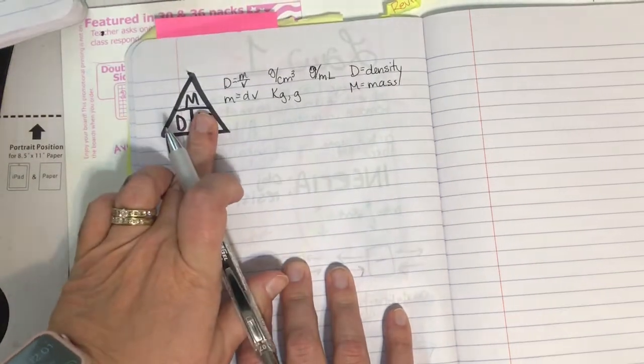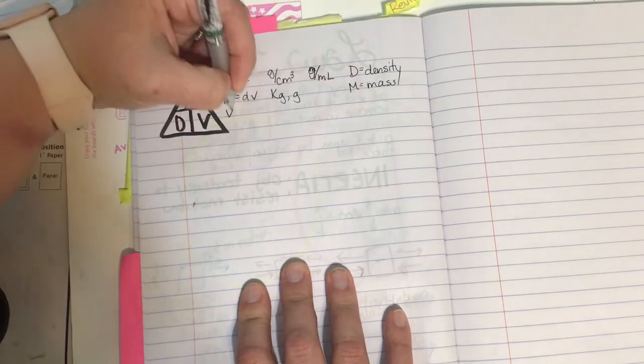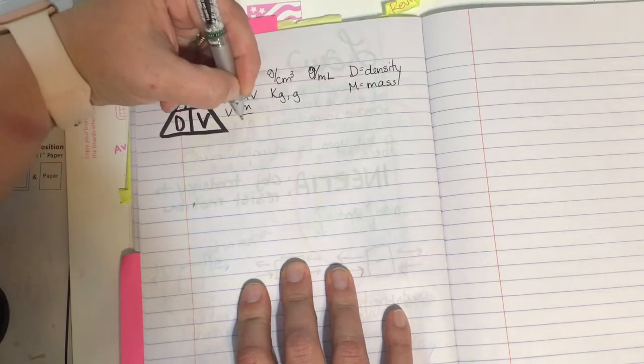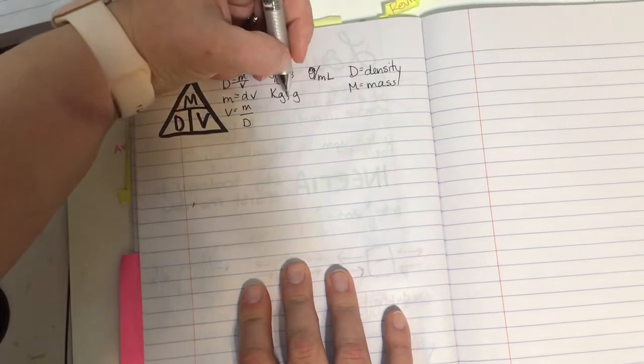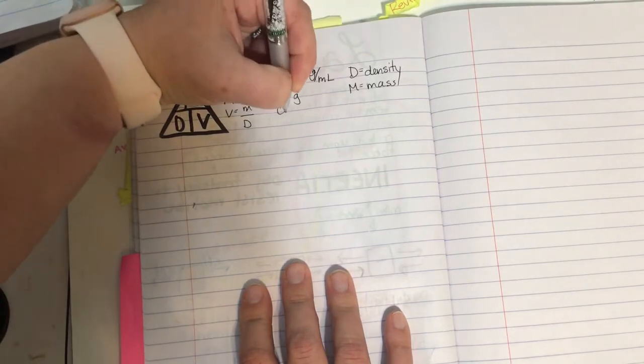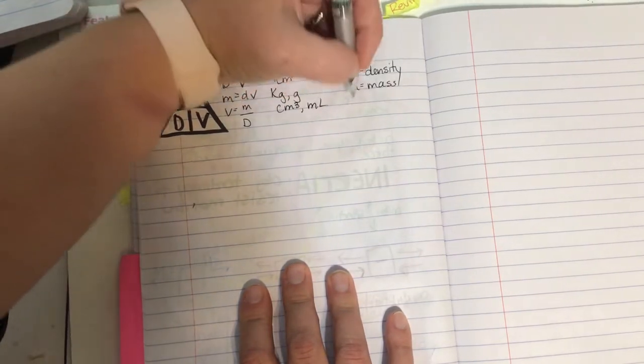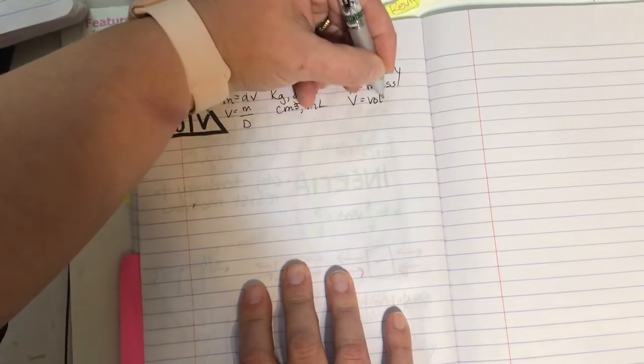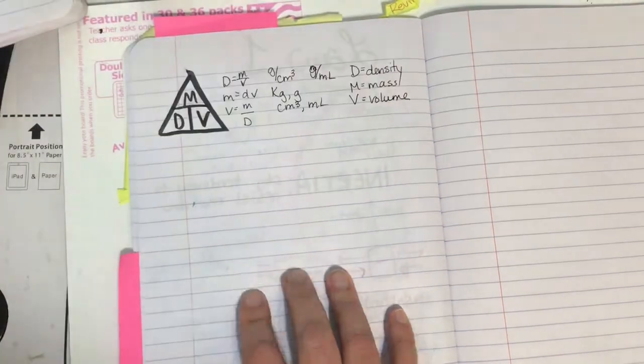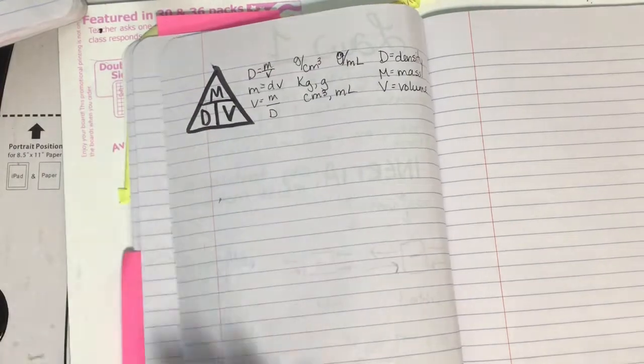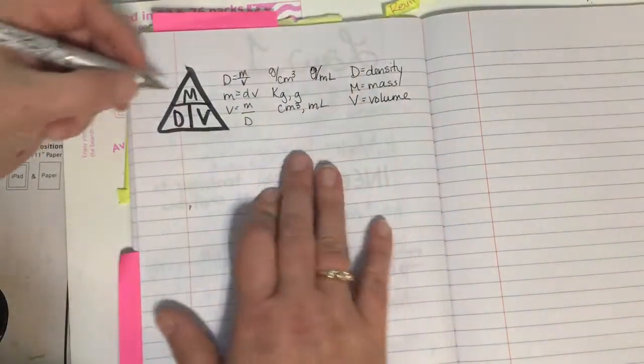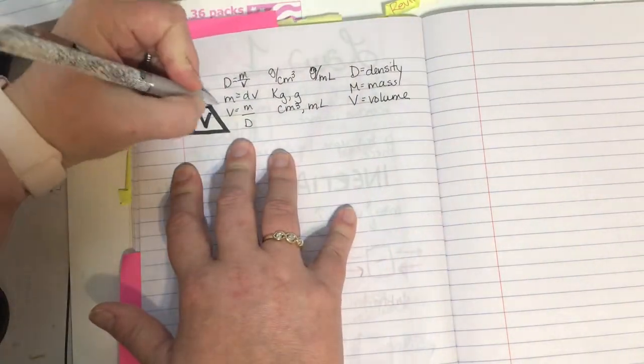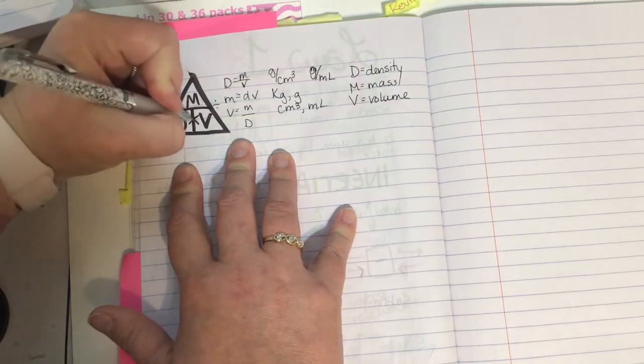And then I can solve for volume. Volume is mass divided by density. Volume can be measured in cubic centimeters or milliliters. And my V here is volume. So I just wanted to refresh your memory about how to use this density triangle. Remember, if it's above and below, I divide. If it's side by side, I would multiply.